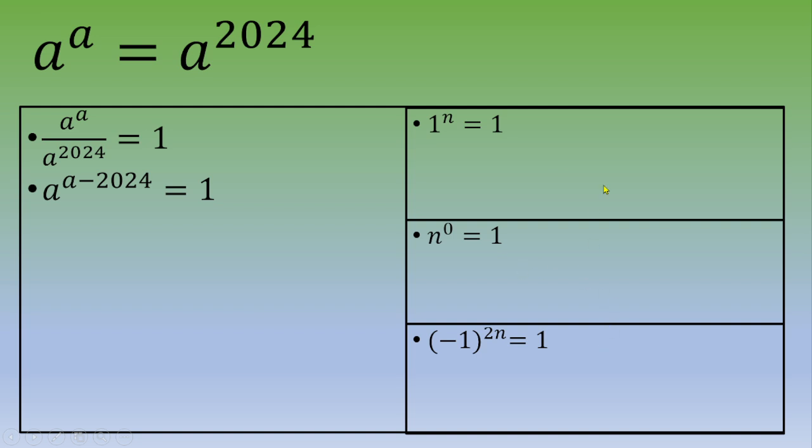Let's see these three cases one by one. First case: if 1^n = 1, if you apply this to this exercise, then a = 1. And if you plug it in, you will get 1^(1-2024) = 1^(-2023), and this is 1.